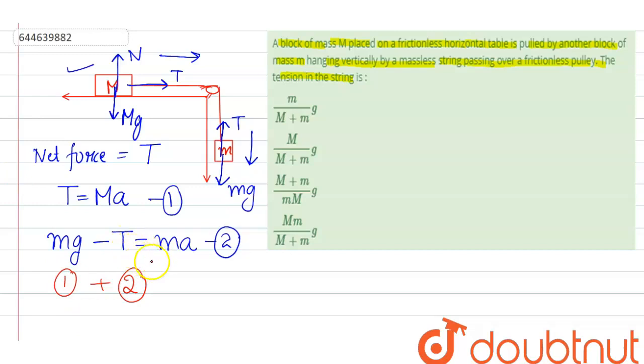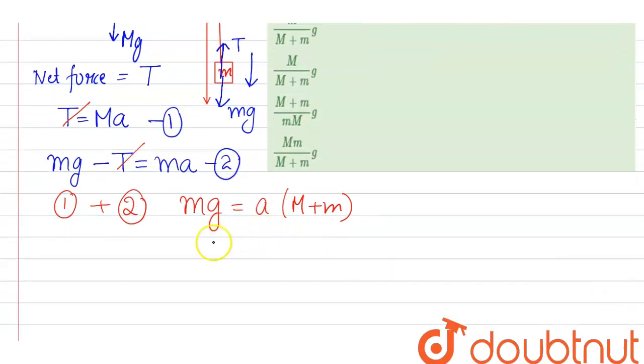so we get tension cancel out with tension. So Mg equals A common capital M plus small m. So A comes out to be Mg over capital M plus small m.